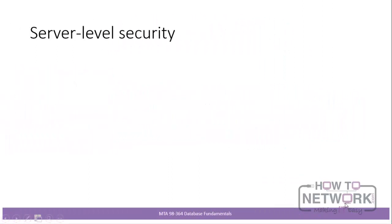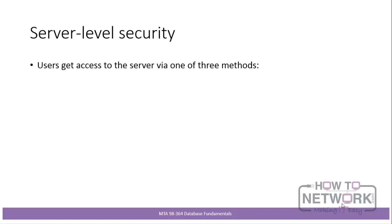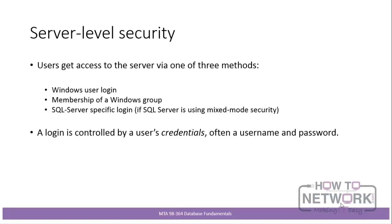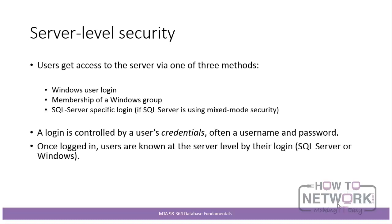The first step in our security model is server level security, where the user gets access first of all to the server. Users get access via one of three methods: either via a Windows user login, by membership of a Windows user group, or by a SQL Server specific login. This third case is only available if SQL Server is using mixed mode security. A login is controlled by a user's credentials, which are often just a username and password. Once logged in, users are known at the server level by their login — either their SQL Server login or their Windows login.